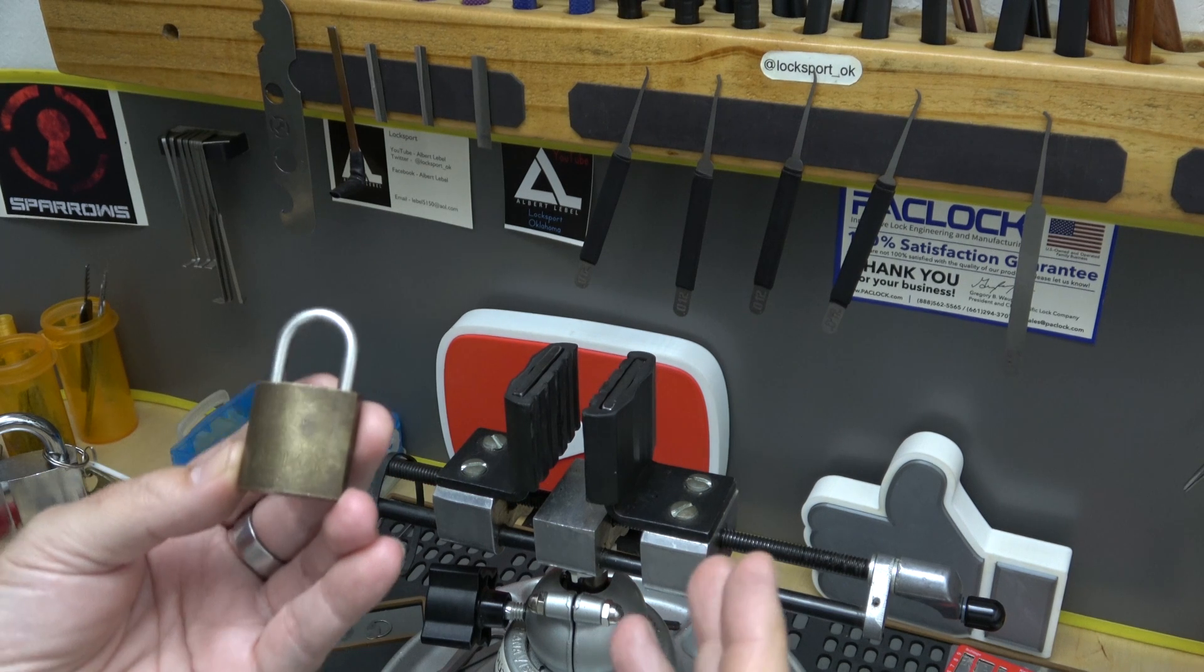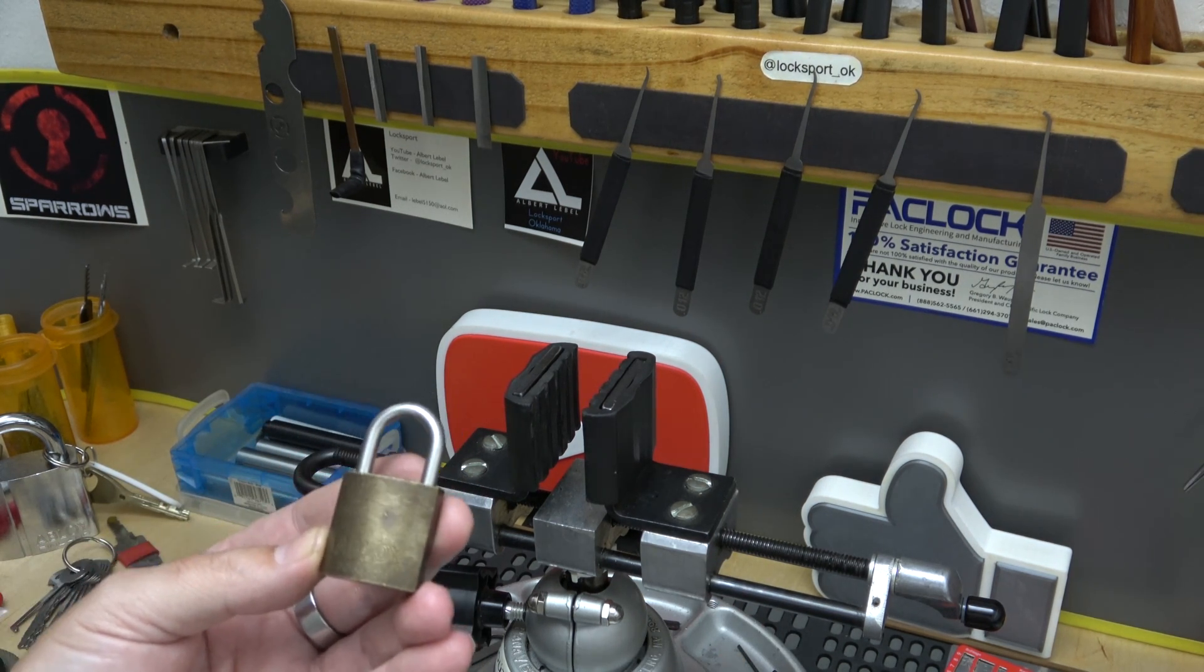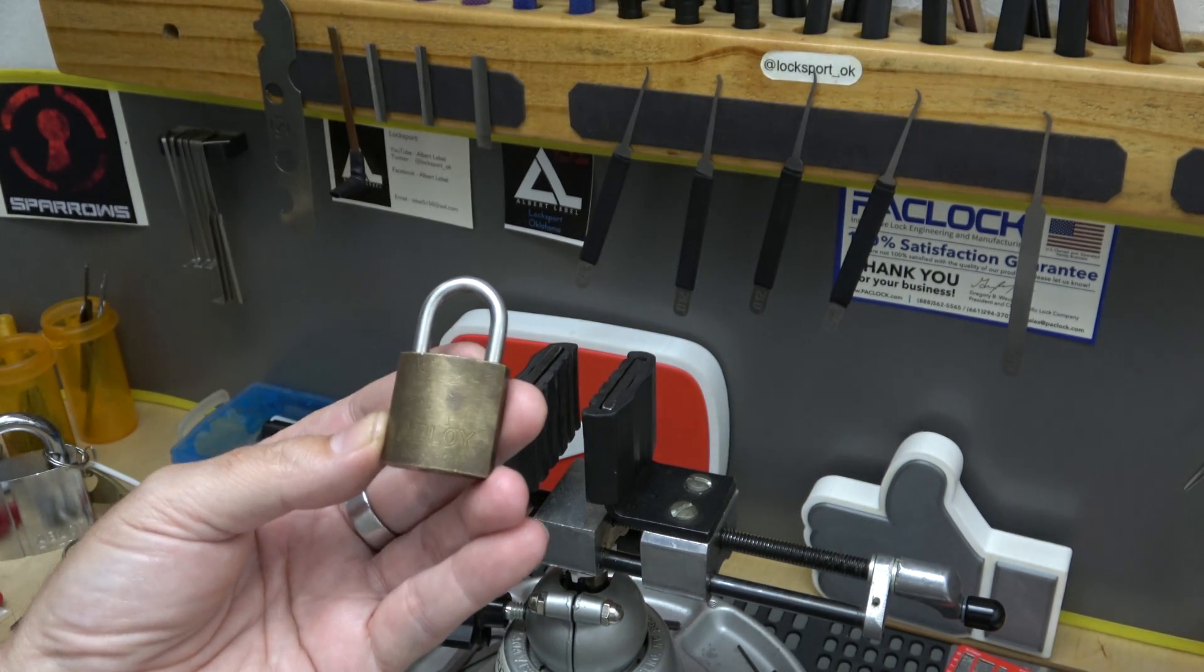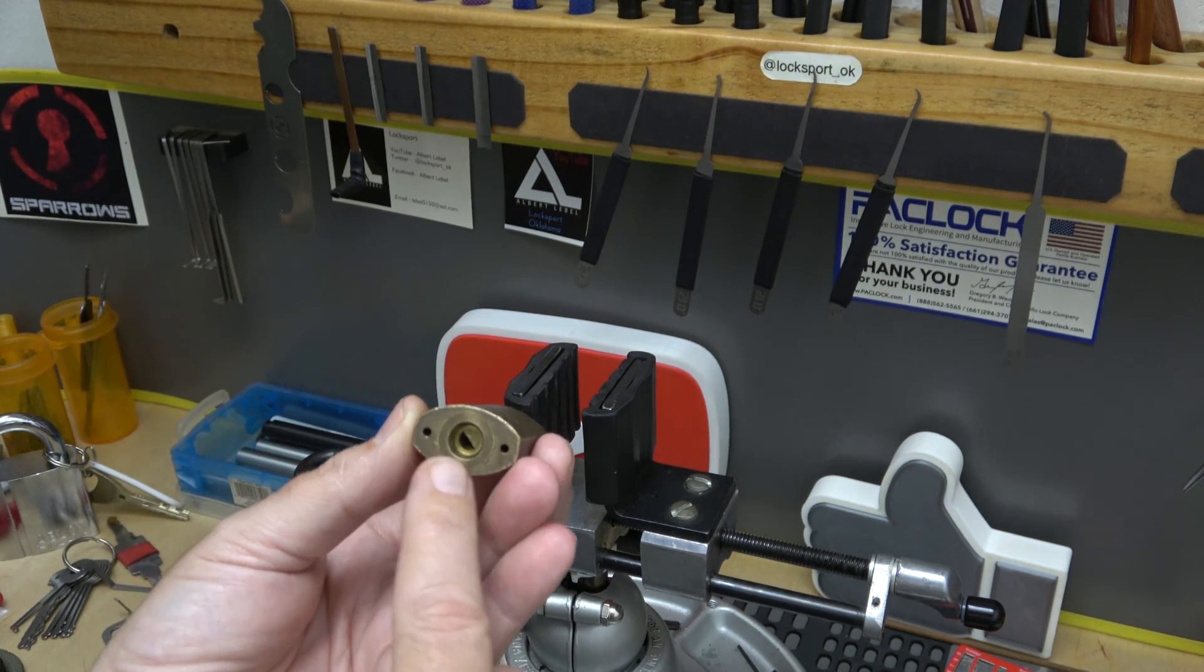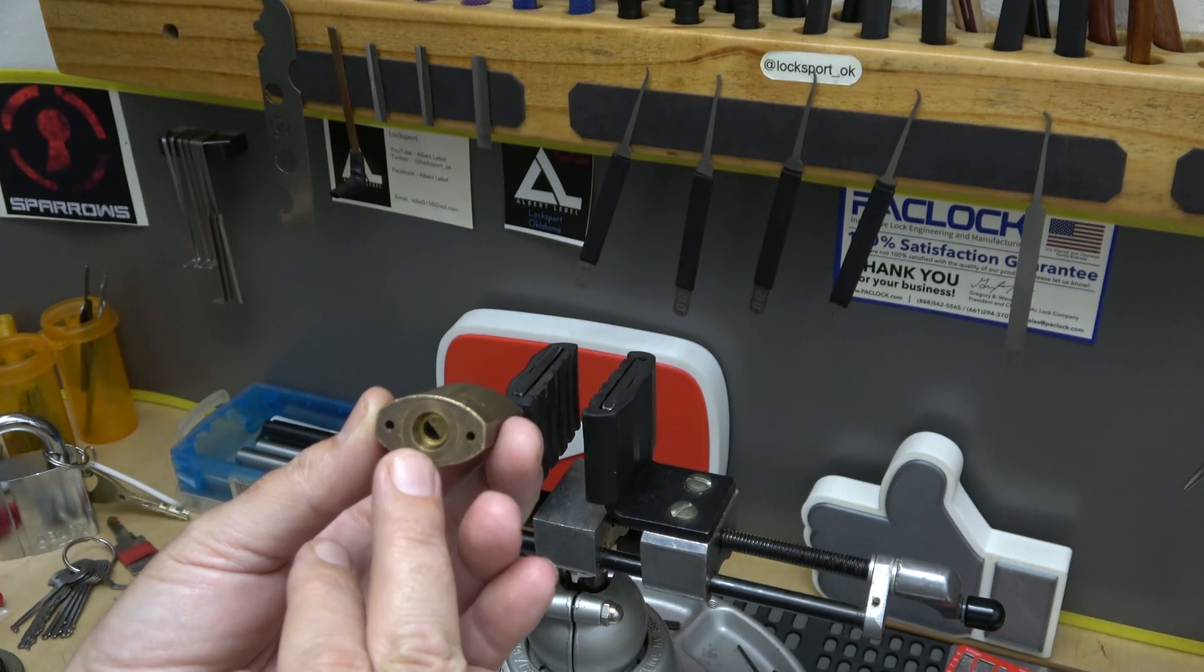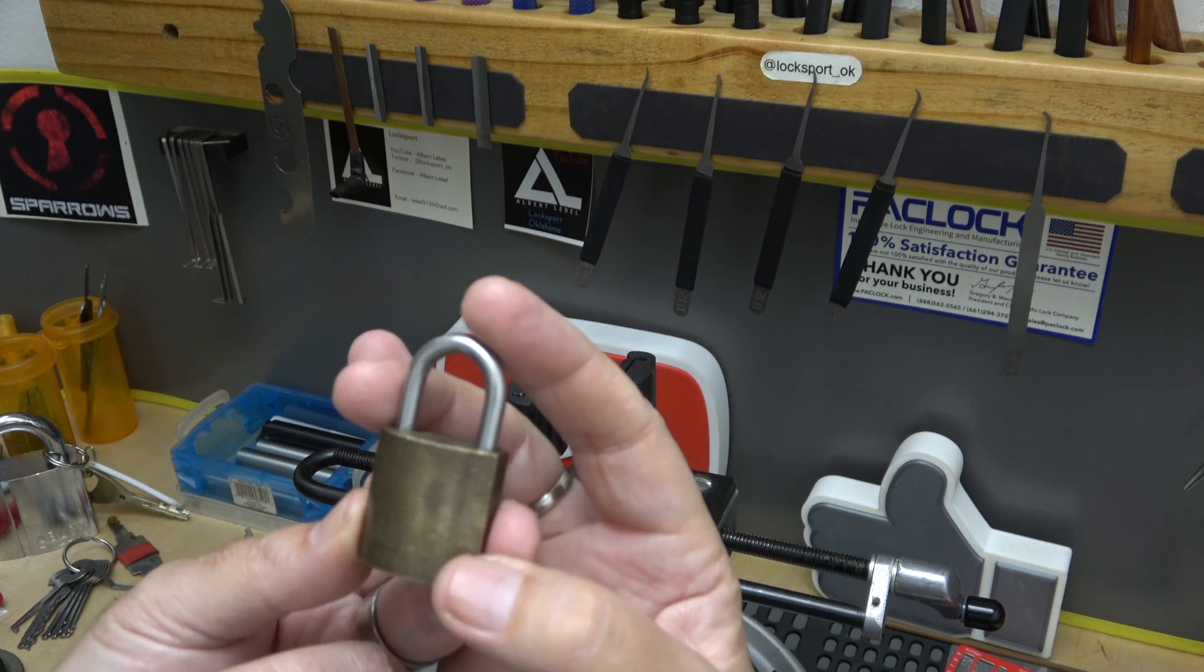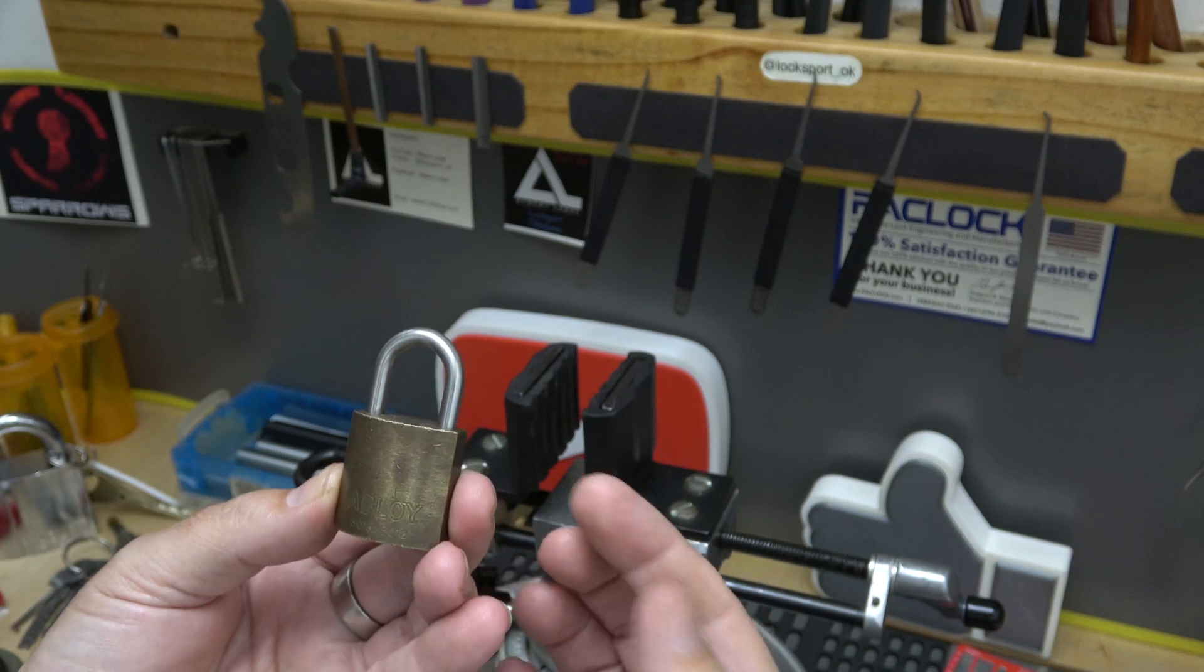Now I've got to ask something, and please let me know in the comments what you think about this, because I think it goes both ways. What is a high security lock? Because in my opinion, and I think everyone's opinion, an Abloy is a high security lock, right? By all means it's a high security lock. But in a casing this size, that's not high security. It wouldn't take much to cut through the shackle.